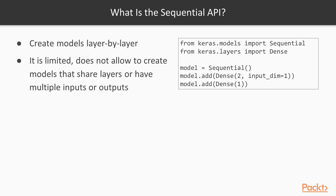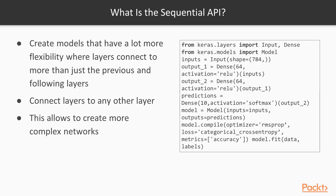The challenge with the sequential API is that it is limited because you cannot create models that have shared layers or multiple inputs or outputs. In order to do this you need to use the functional API. The functional API allows you to create models with a lot more flexibility. You can easily define models where layers connect to more than just the previous and next layers — you can connect layers to other layers in any sort of fashion within the model architecture. This really allows you to create way more complex networks.